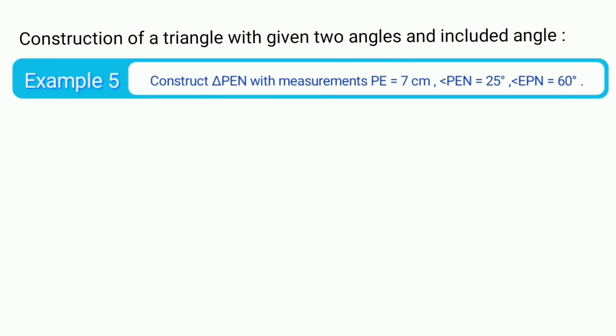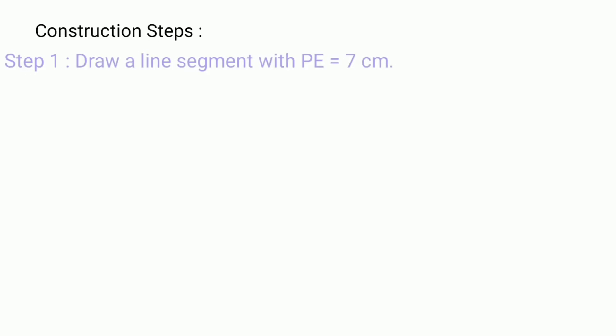Example 5: Construct triangle PEN with measurements PE equal to 7 cm, angle PEN equal to 25 degrees, and angle EPN equal to 60 degrees.